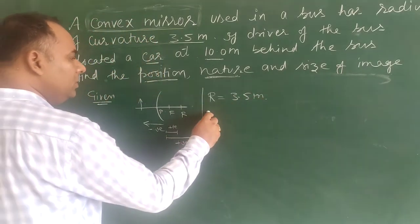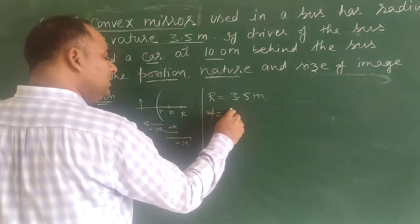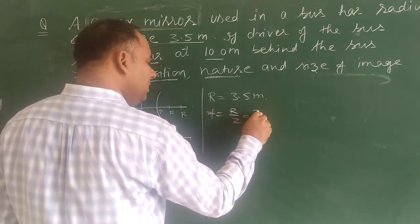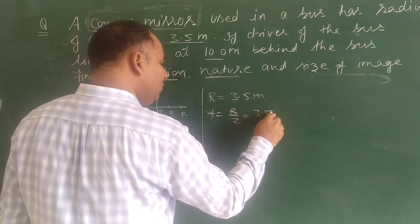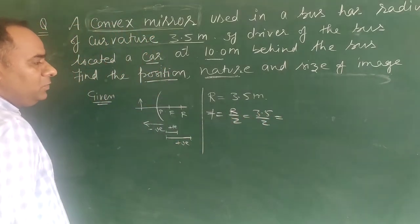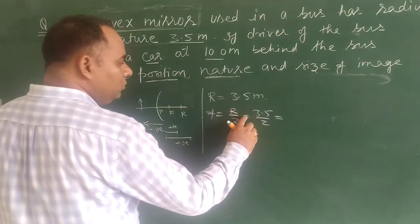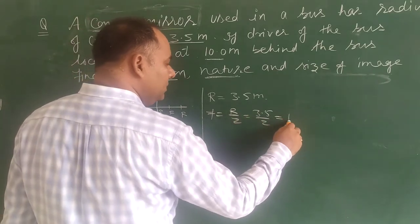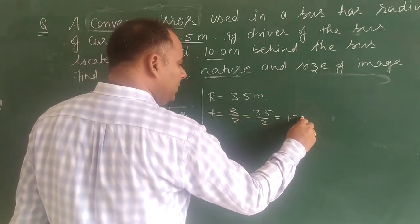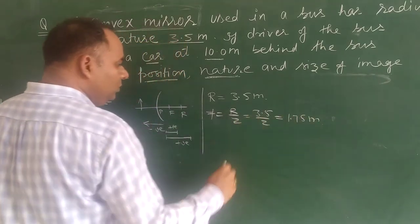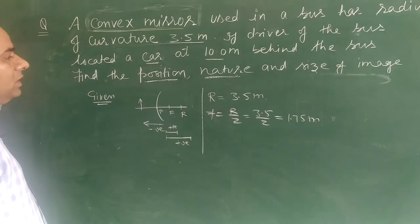From the radius of curvature, we can determine the focal length. Focal length f is equal to R divided by 2, so f equals 3.5 divided by 2, which gives us 1.75 meters. So the focal length is 1.75 meters.